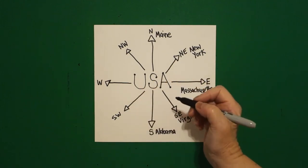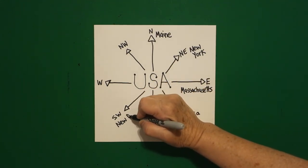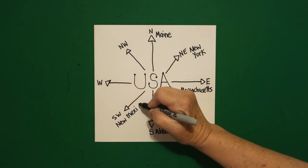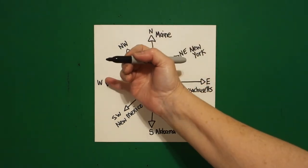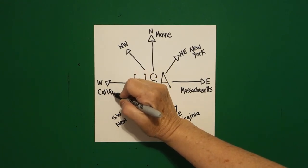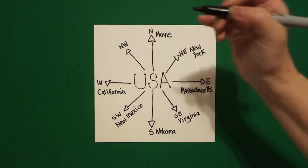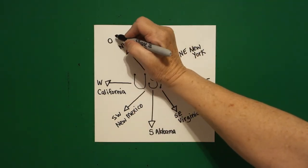I come up to the southwest. This is New Mexico. I come over here to the west. This is California. And I come up to the northwest, and this is Oregon.